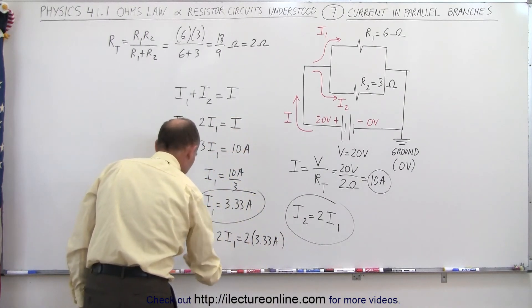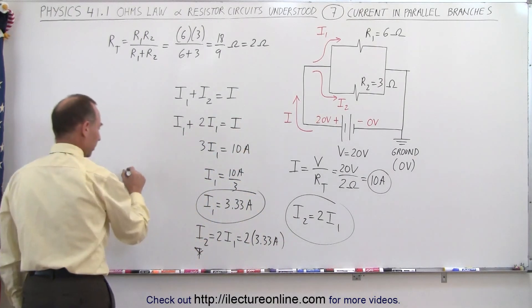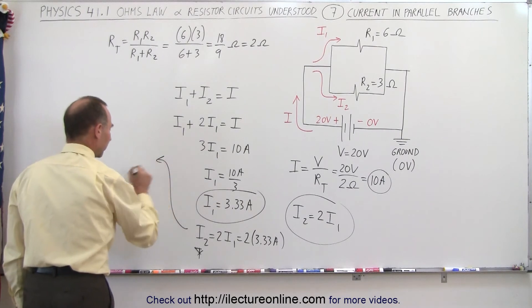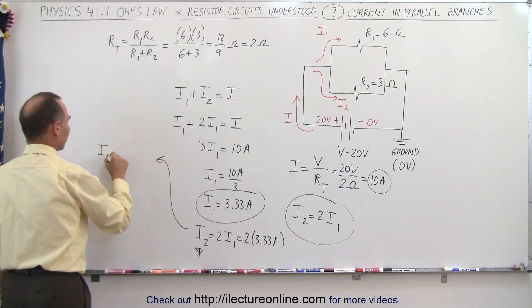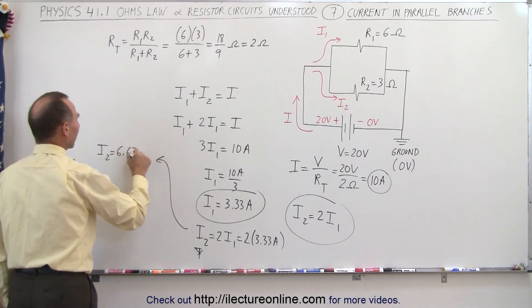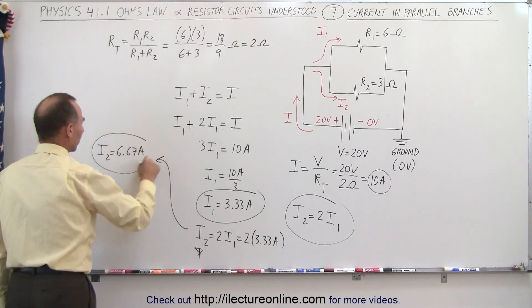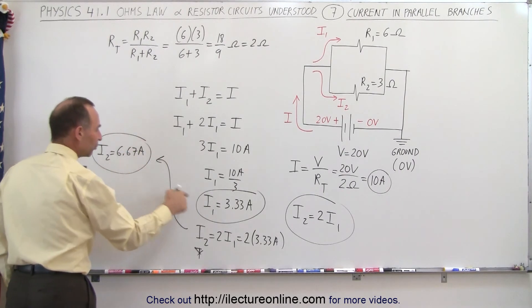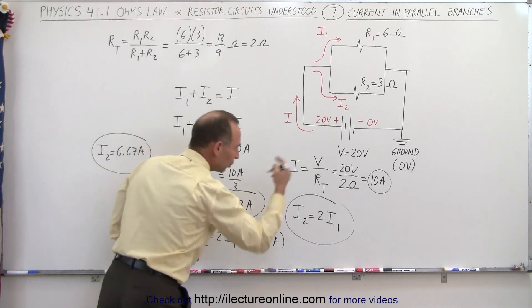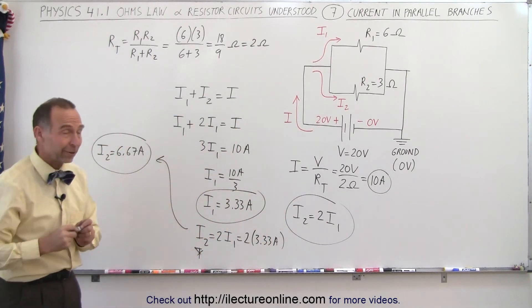In other words, I2 is equal to 6.67 amps. If you add I1 and I2 together, indeed, you do get the 10 amps, so we get the correct values.